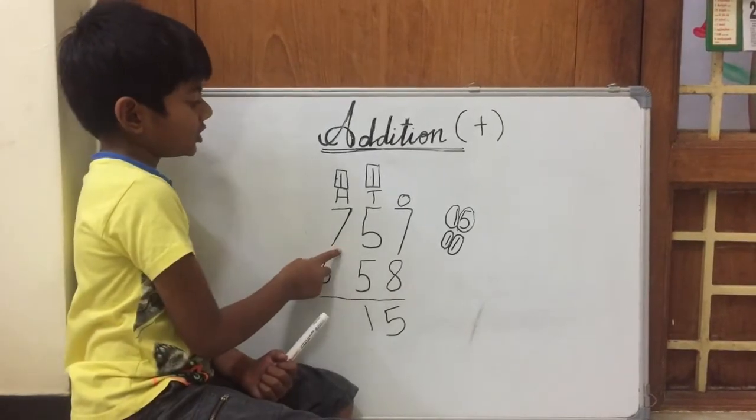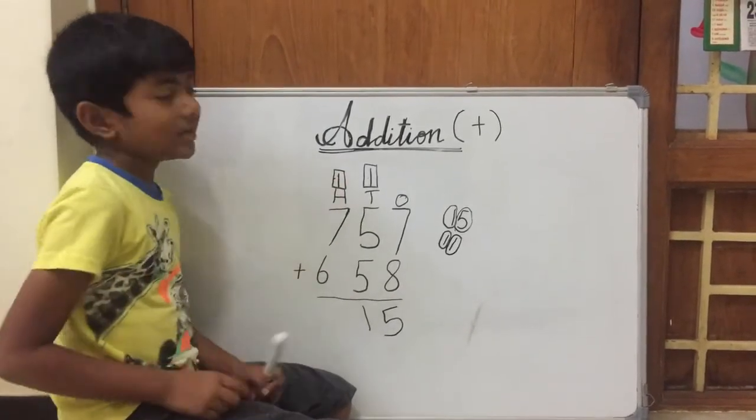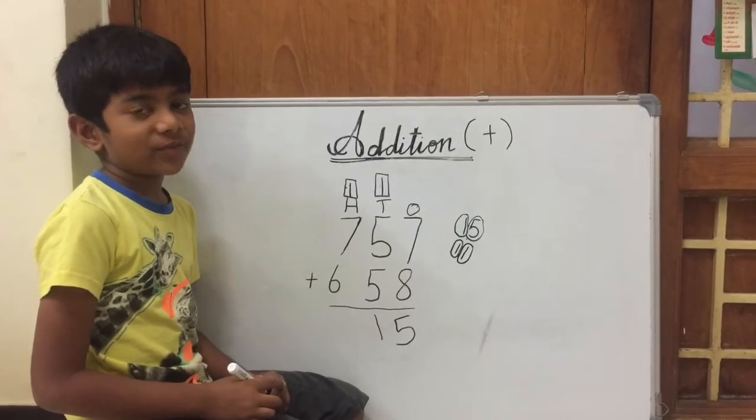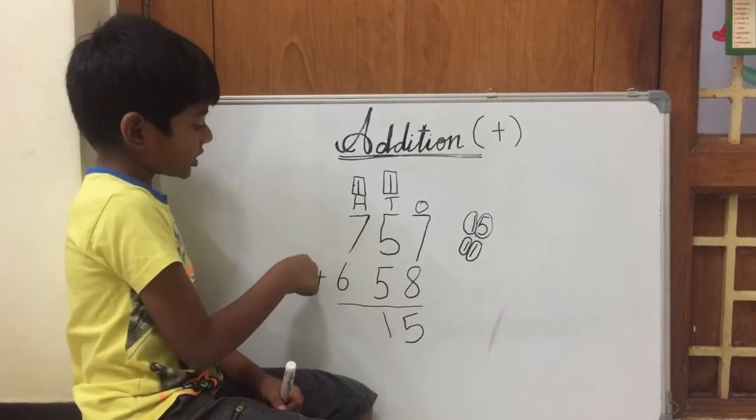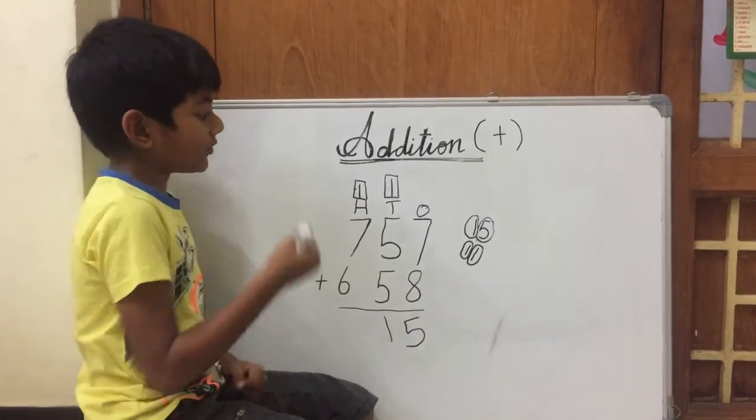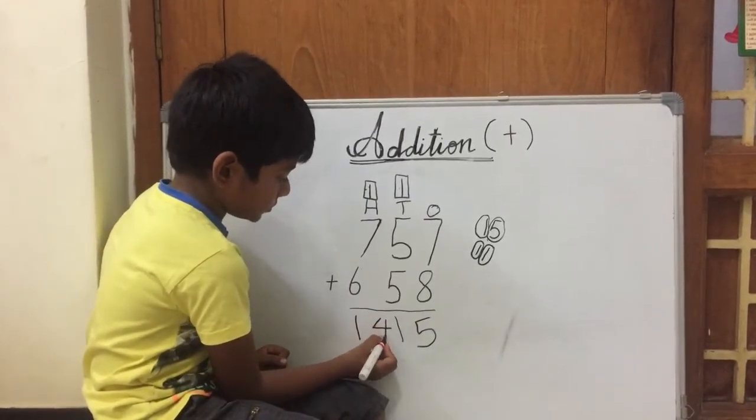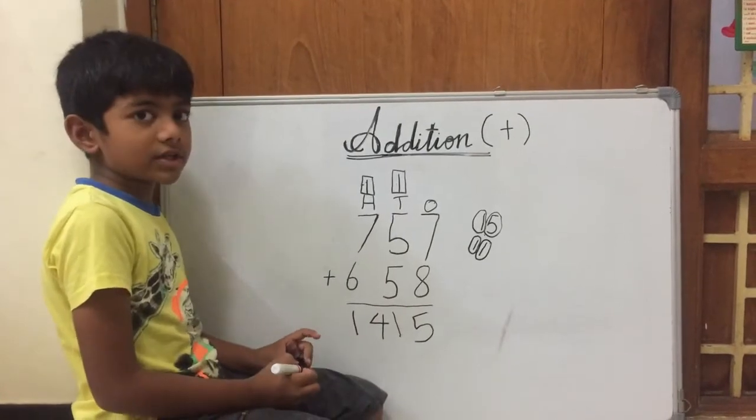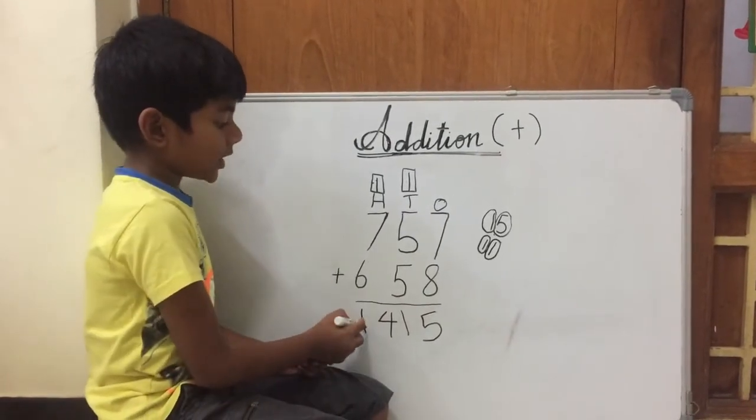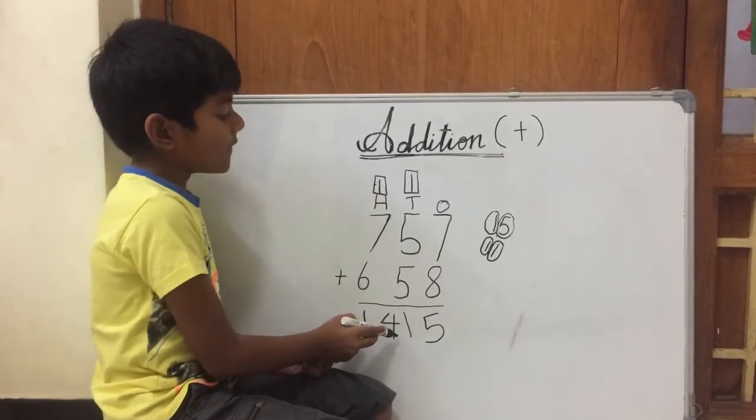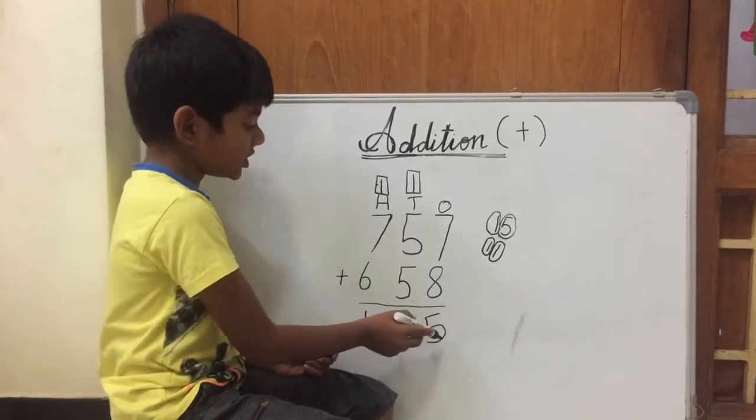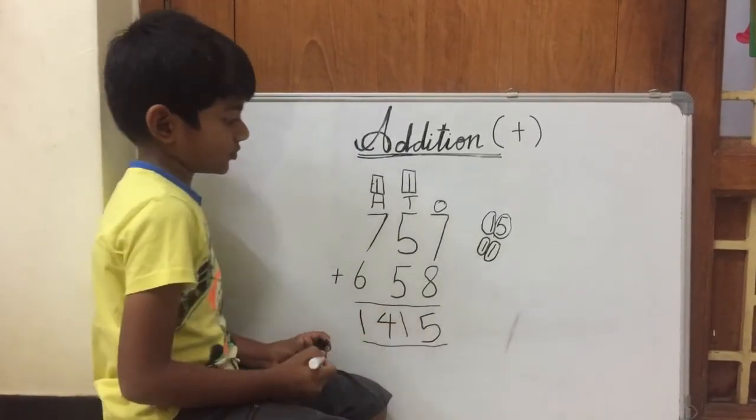What is 13 plus 1? Yes! It is 14. There is no place right here, so we can write 14 just like this. Now let's see what number is the sum. It's 1415. So this is the answer.